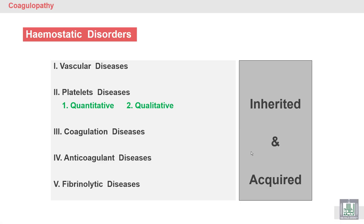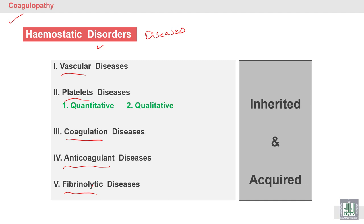We will discuss hemostatic disorders or coagulopathy. Coagulopathy means diseases or disorders of the coagulation system. It may involve vascular, platelet, coagulation, anti-coagulant, or fibrinolytic components. Disorder in any one of these five steps of coagulation will lead to disease. The diseases may be inherited.